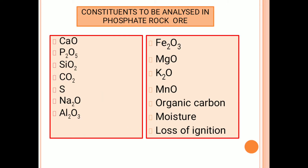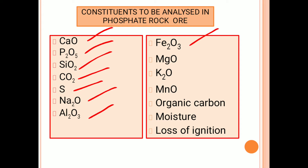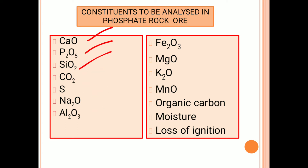The constituents to be analyzed in phosphate rock ore are: calcium oxide, phosphorus pentoxide, silica, carbon dioxide, sulfur, sodium oxide, alumina, ferric oxide, magnesium oxide, potassium oxide, manganese oxide, organic matter, moisture, loss on ignition, etc.